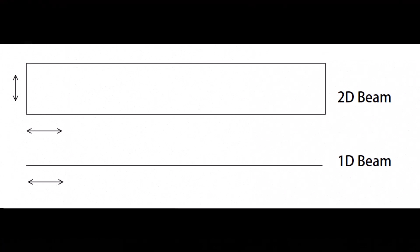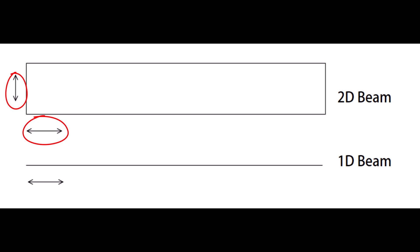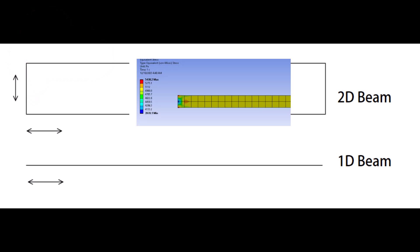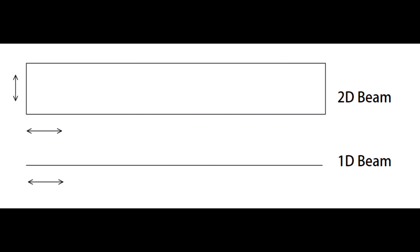Here you can see one-dimensional and two-dimensional beams. One-dimensional beams have a longitudinal displacement. Two-dimensional beams have displacement in the Y direction too. Therefore, we cannot fix all degrees of freedom of boundary conditions of 2D beams, because high artificial stress occurs in fixed boundary conditions. To clarify this problem, I'm going to model a one-end fixed support beam in ANSYS.